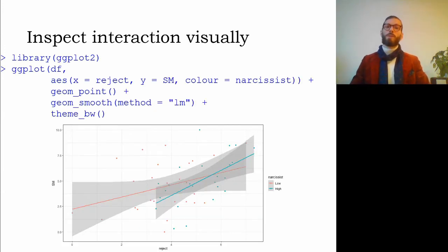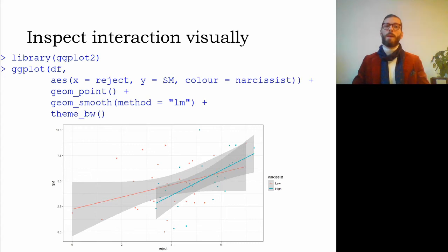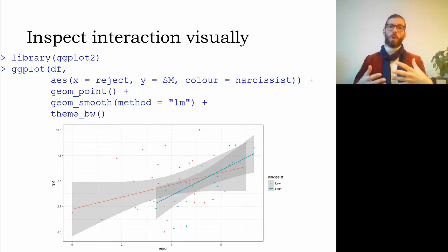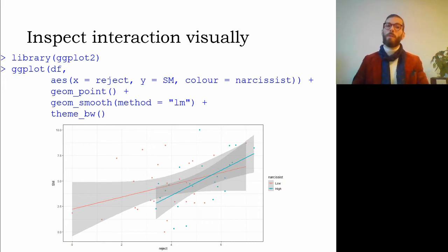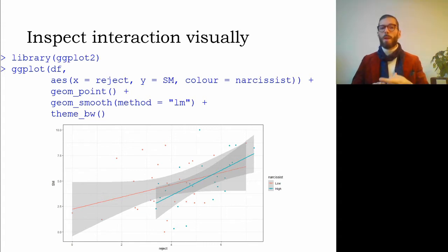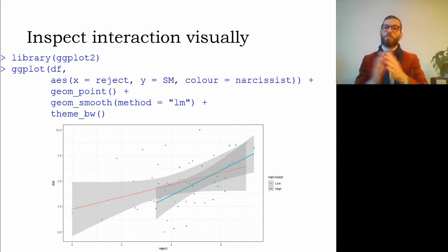It is useful to inspect this interaction visually — syntax for this is in this week's exercises. Using ggplot2, I plot the data frame df, mapping rejection to the x-axis, sm to the y-axis, and narcissist to the color of the lines. I add geom_point for individual data points, geom_smooth with the lm method, and theme_bw for an APA style graph. The plot shows the interaction term is not very strong and there is a restriction of range, with high narcissists tending to experience greater rejection.